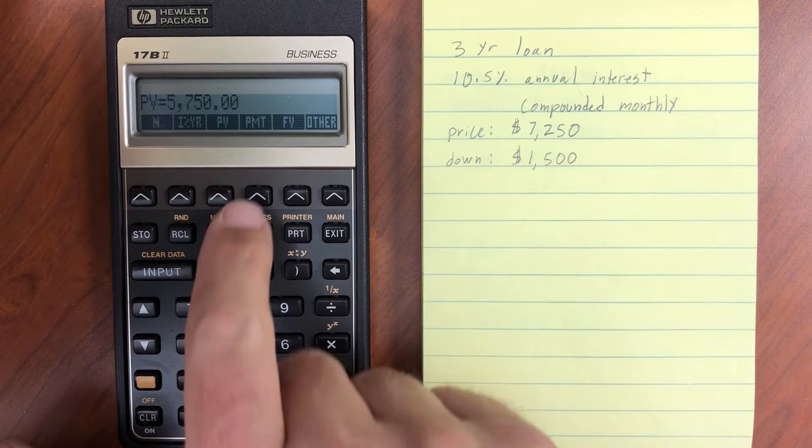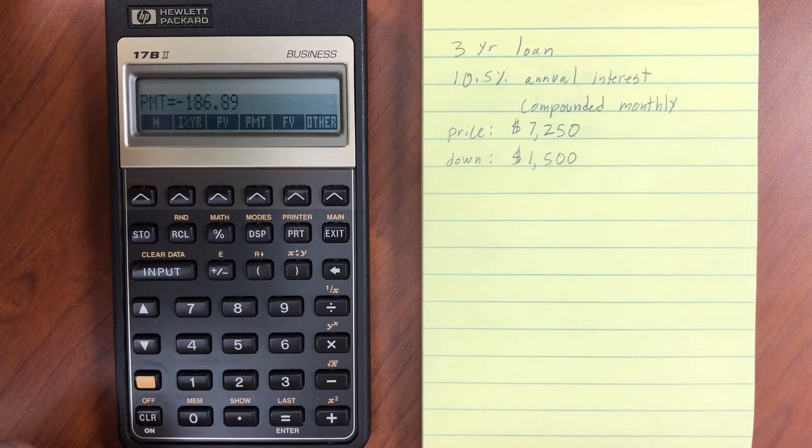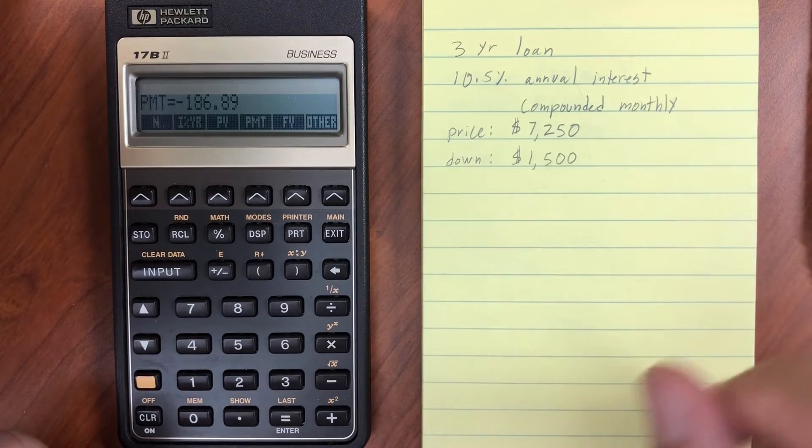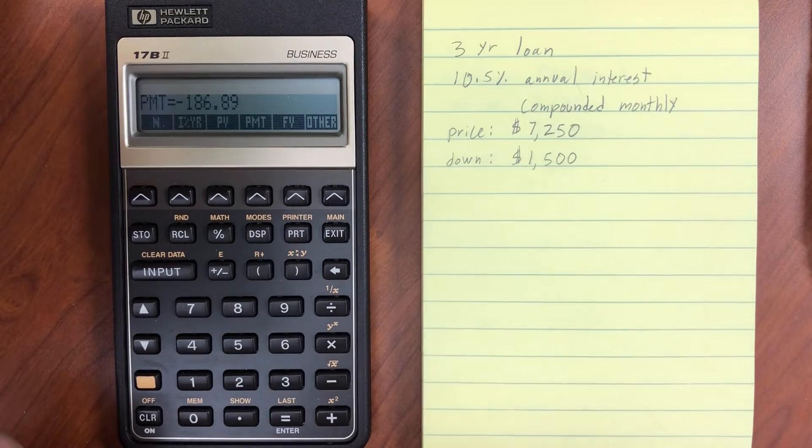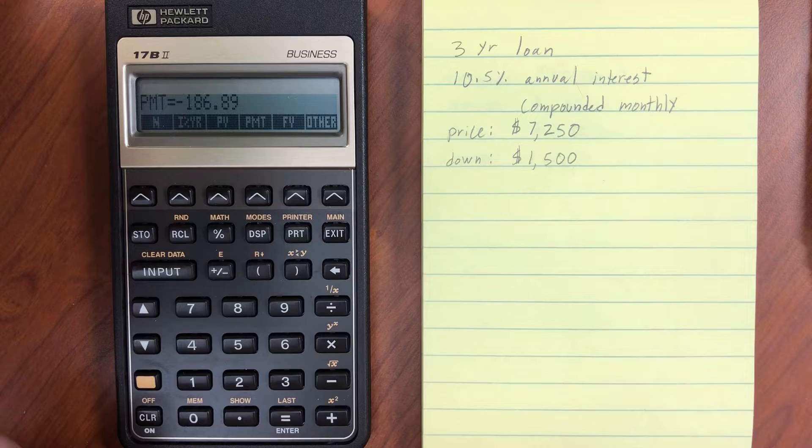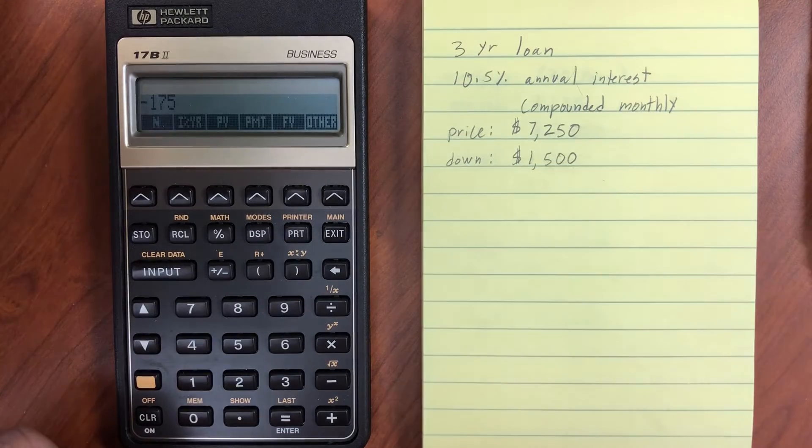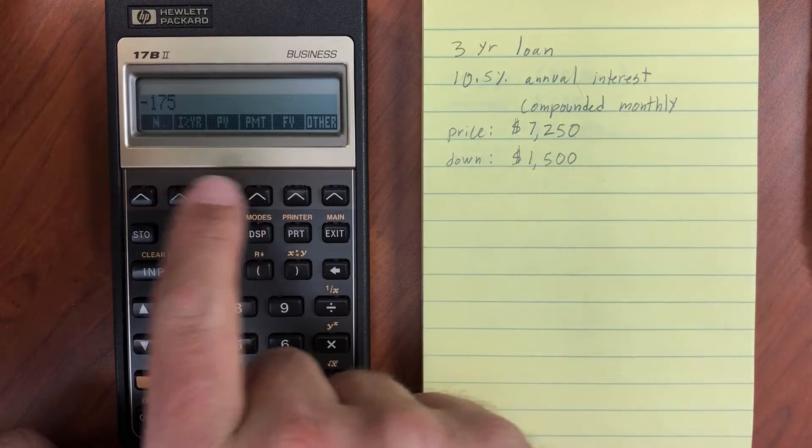So now what's our payment going to be? Our payment is going to be $186.89, and it's just negative because we're paying down, just a different sign. But let's say that's a little more than we're willing to pay, so we'll do $175. That's what I can afford per month. So I'm going to set that as my payment. Notice I've changed the sign to negative.